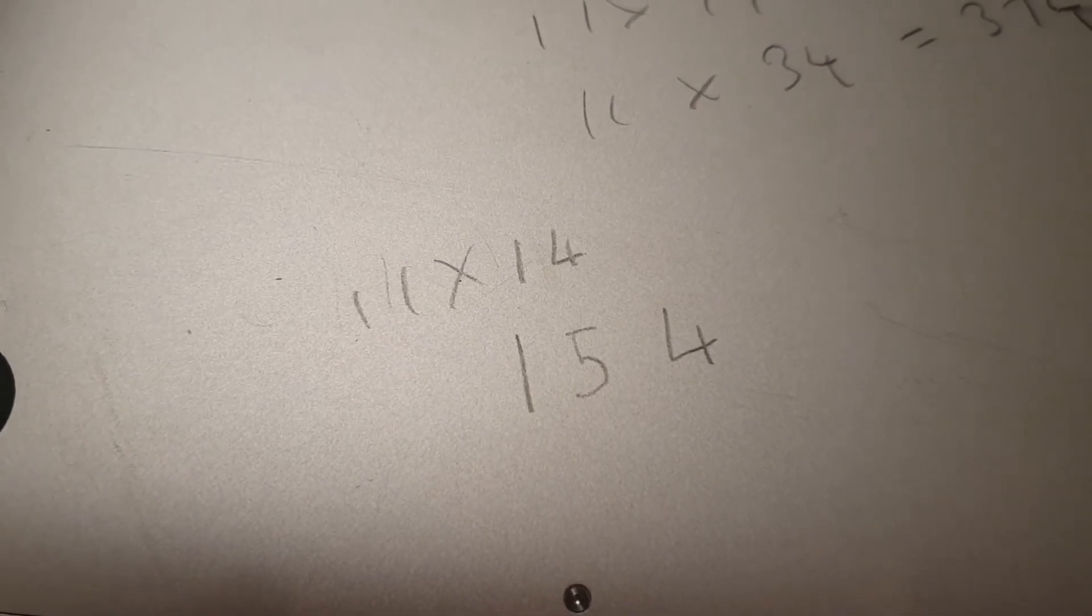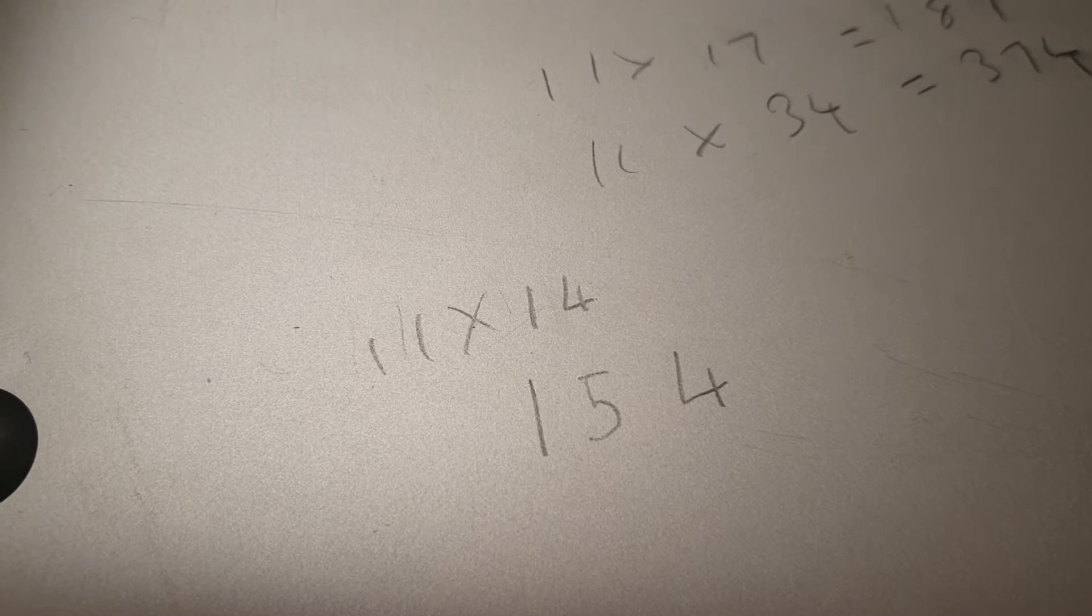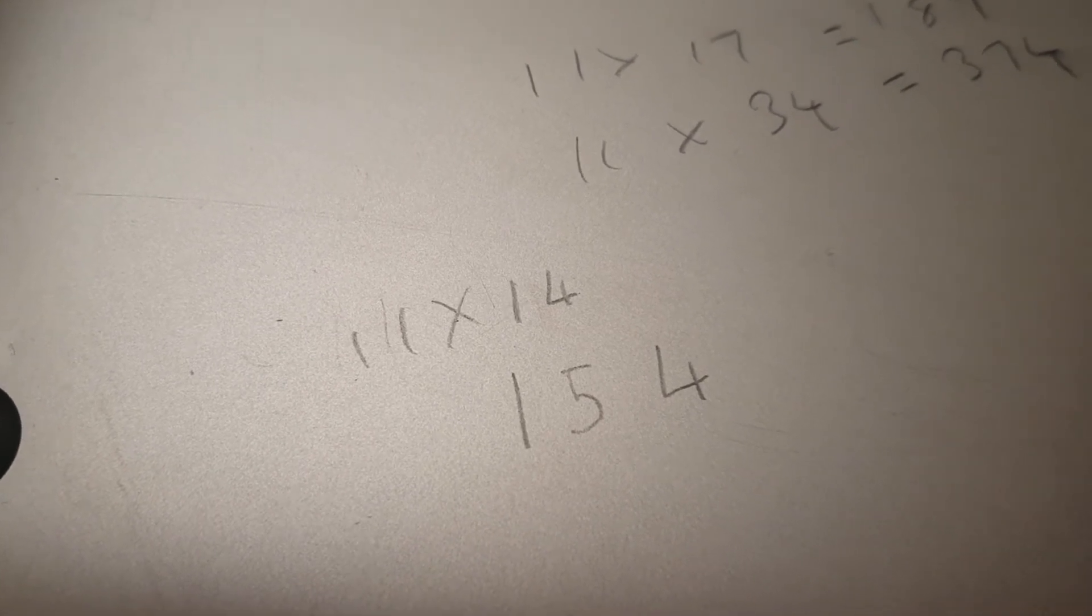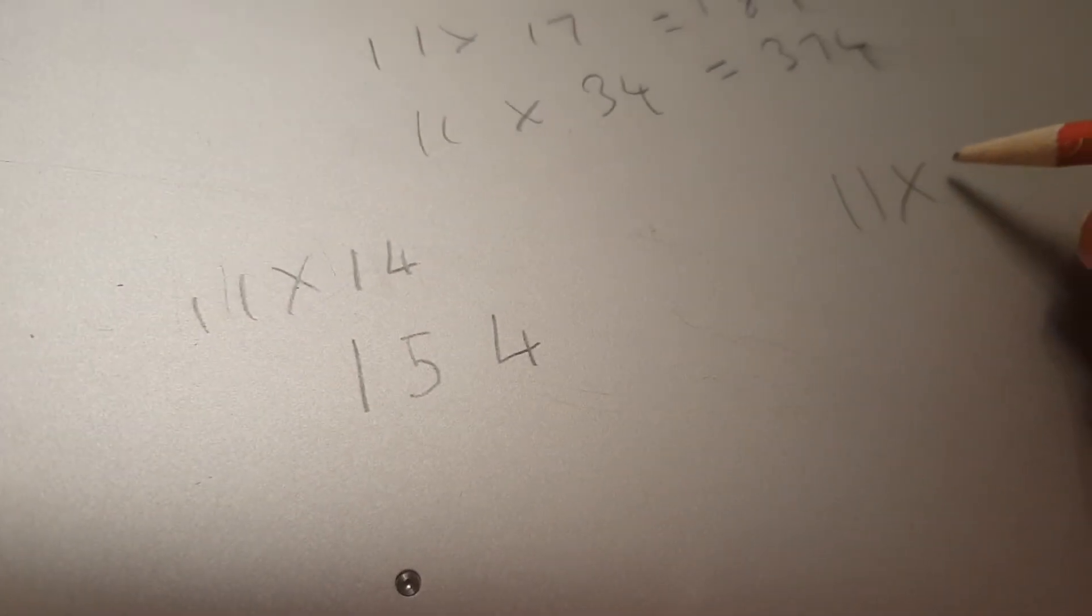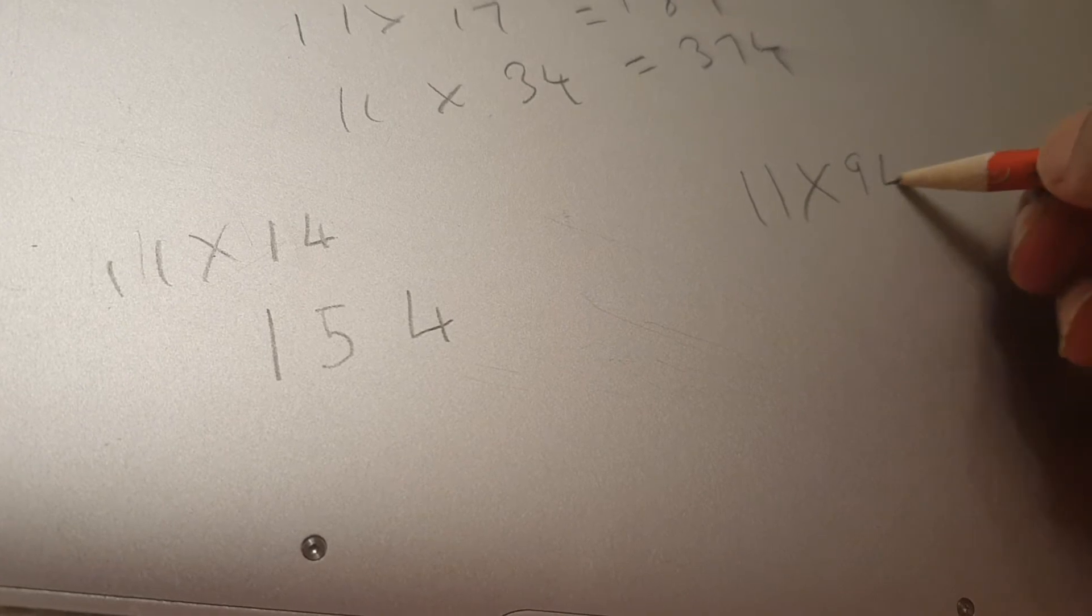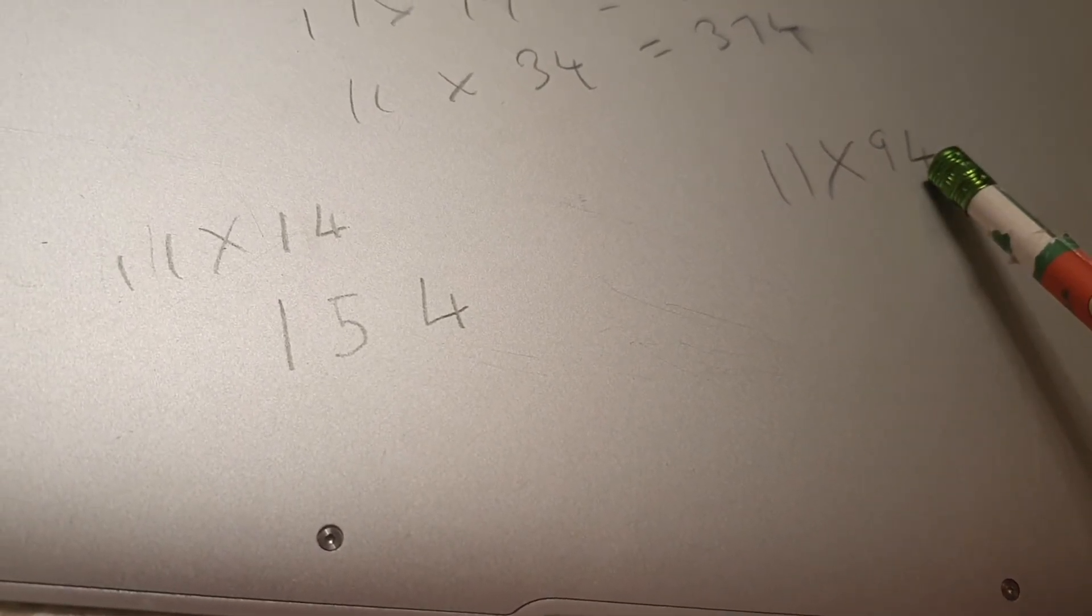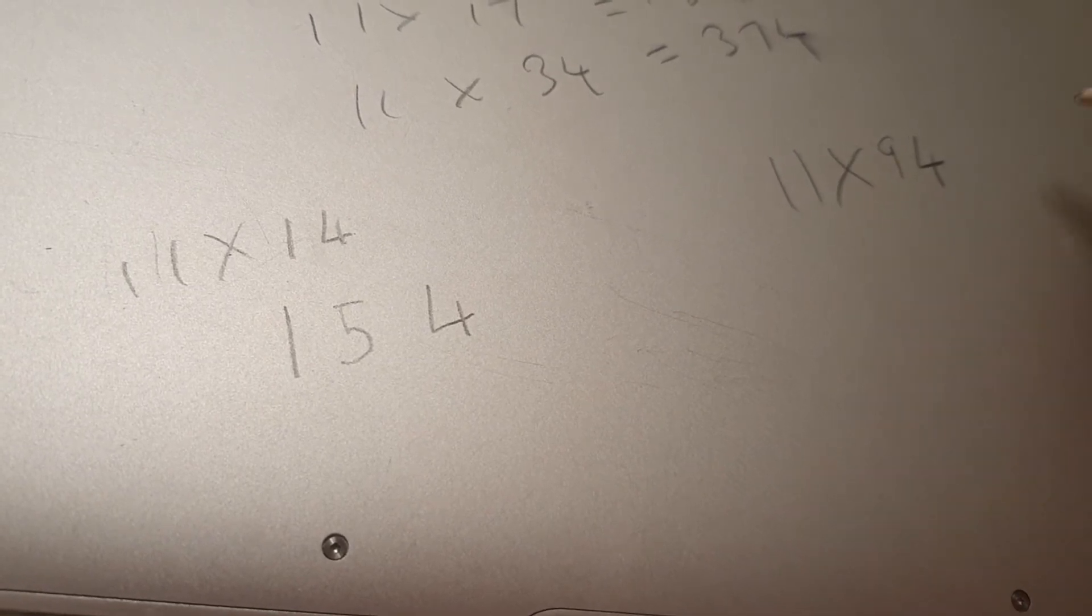So this is a really quick way of doing your 11 times table. It's very simple, very easy. When you're getting up to the big numbers, say 11 times 94, then you'll notice that you can't do the 9 and the 4 because now all of a sudden that equals 13. So you've got to carry 1 across.